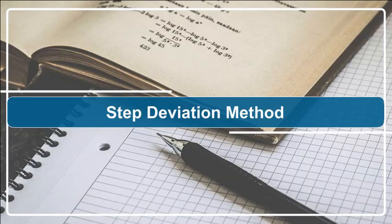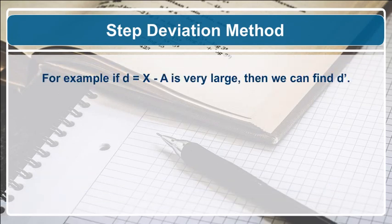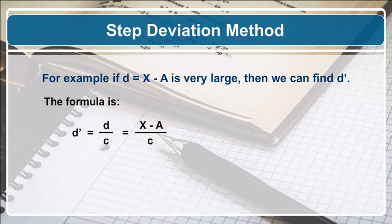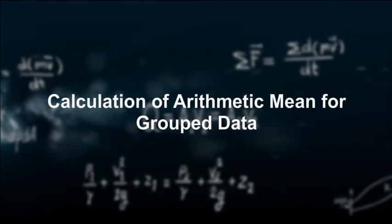In the step deviation method, calculations are simplified by dividing all deviations taken from the assumed mean by a common factor c. If d = x − a is very large, we find d-dash = d/c = (x − a)/c. Then x-bar = a + (summation of d-dash / n) × c, where d-dash = (x − a)/c, c = common factor, and a = assumed mean.